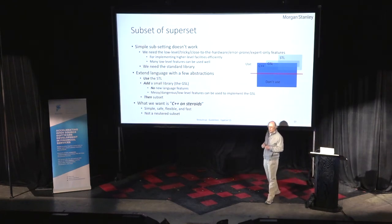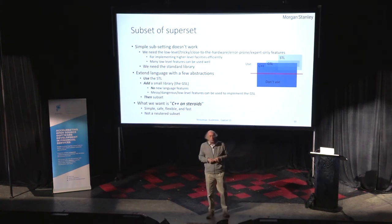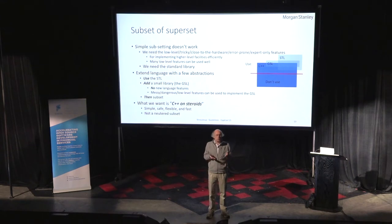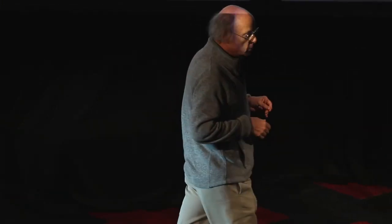The other principle we're working on is the subset-of-superset idea, which is an old idea. Everybody wants to subset the language, but to subset C++ you start by removing the most dangerous features — which are the ones we use to implement the abstractions you need to be safe. You cannot cut uses of pointers without destroying vectors, but you need vectors to avoid pointers. So instead, we first superset the language to a more ideal language using the STL, the standard template library, other standard libraries, and something called the GSL — about ten classes written specifically for the guidelines. Then we can say: don't do the nasty things that get you into trouble.